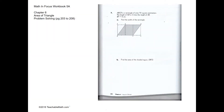Question 7: ABCD is a rectangle with area 72 square centimeters. The length of AD is 3 times the length of AE, so these segments are all equal. BF equals 8, so the three equal parts are each 4 centimeters, making the total length 12 centimeters.